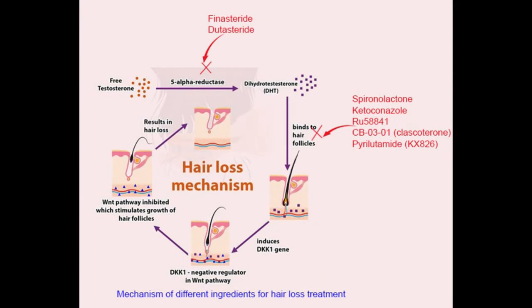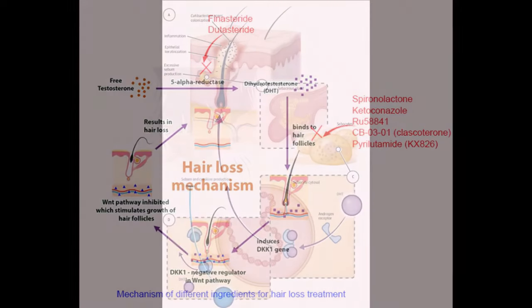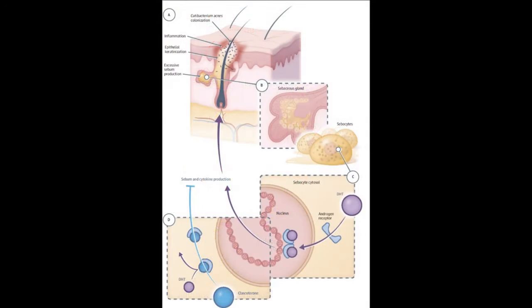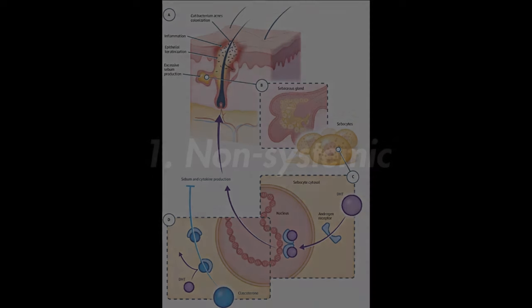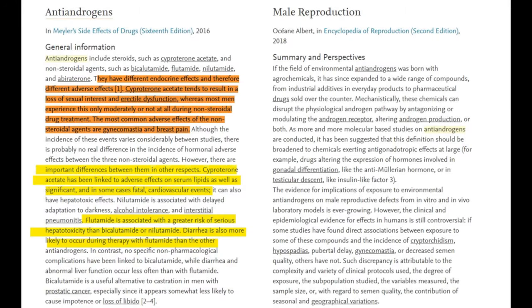Using topical antiandrogens for the treatment of androgenetic alopecia largely depends on a few factors. First, we want to make sure that the topical antiandrogen agent we use doesn't go systemic. Because an antiandrogen that blocks all androgens — not just 5-alpha reductase or DHT, but all androgens including testosterone — going systemic is not a good idea. We want to make sure it doesn't go systemic, and if it does, it has minimal antiandrogenic effects.